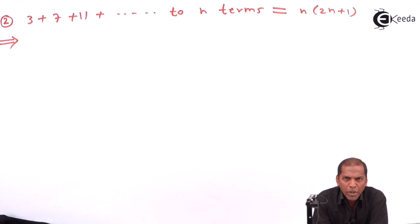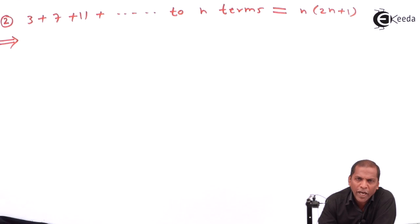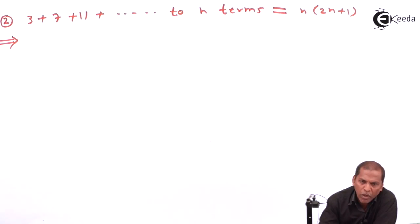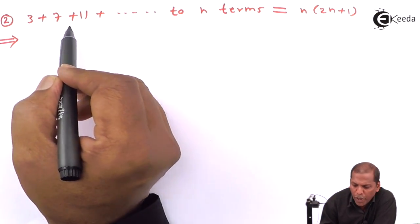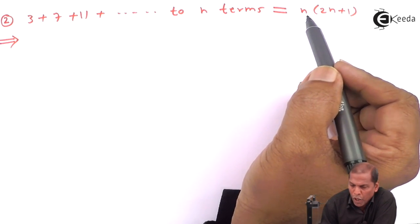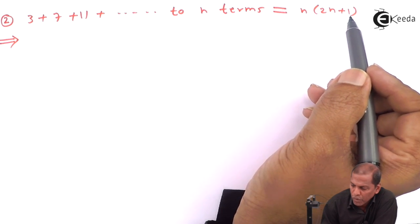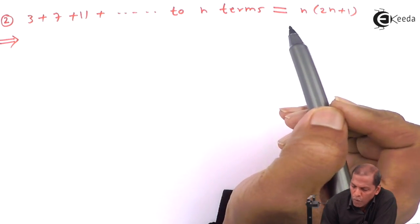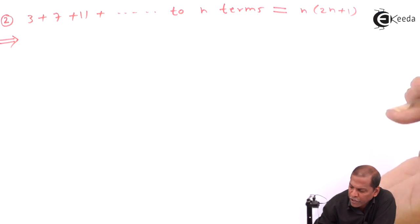Hello friends. Now we see problem number 2, which is also based on the principle of mathematical induction from the chapter on method of induction and binomial theorem. The problem number 2 is: 3 plus 7 plus 11 plus up to n terms, and we have to prove that this equals n(2n+1) for all n belonging to the set of natural numbers.